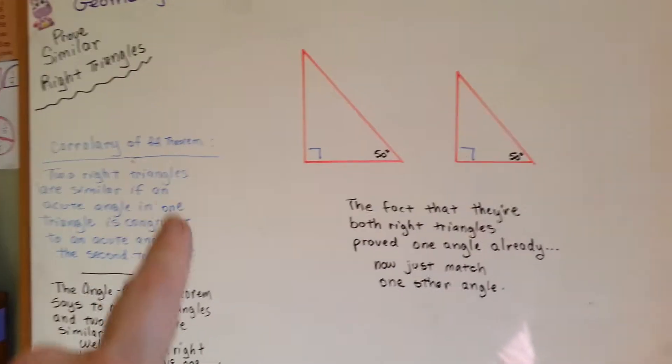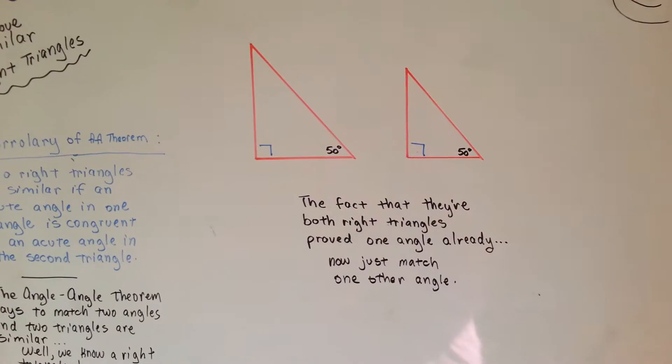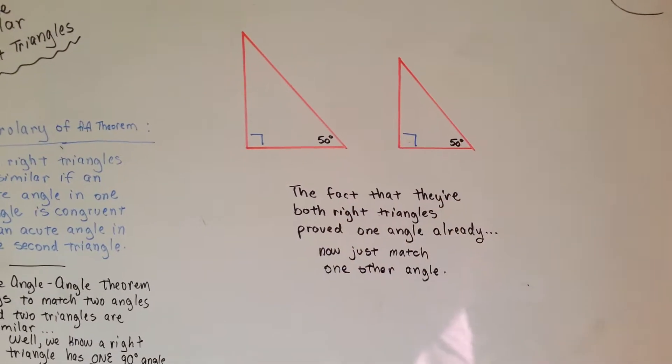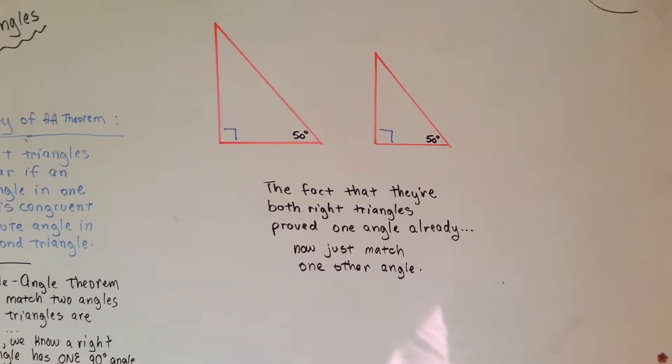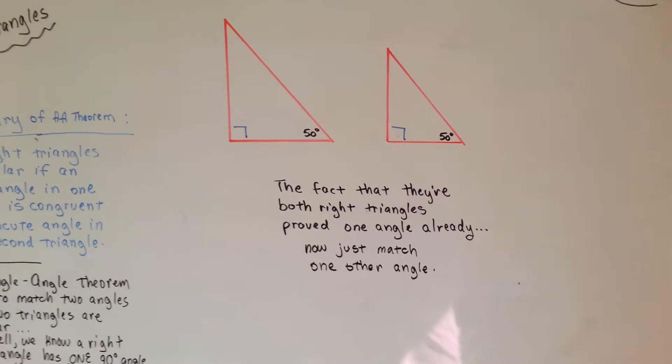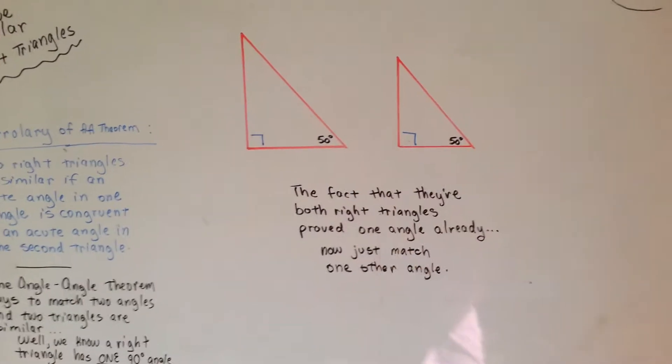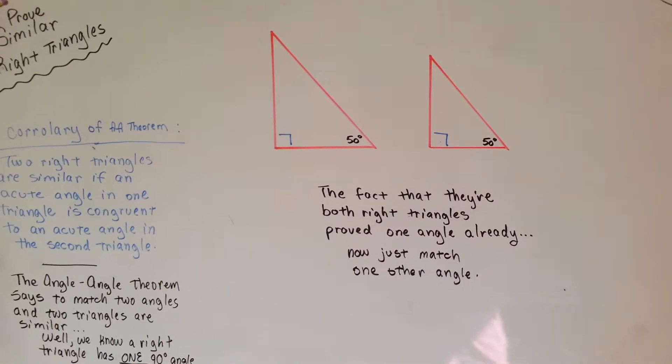Now, I only needed to do one piece of work here. So this corollary says, I only have one piece of work to do, and that is to match an acute angle, and I'm done. These triangles are similar. Don't have to match three sides. Don't have to match three angles. Don't have to match two angles. This one says, just match one angle, and your job is done.